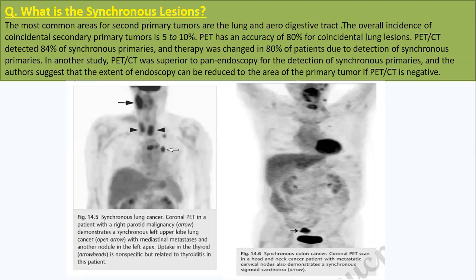The third question: what is the synchronous lesion? This is an important term that can alter the type and plan of treatment. The most common areas for second primary tumors are the lungs and aerodigestive tract. The overall incidence of coincident secondary primary tumor is about 5 to 10 percent. PET has an accuracy of 80 percent for coincidental lung lesions. PET-CT detects 84 percent of synchronous primaries and therapy was changed in 80 percent of patients due to their detection.